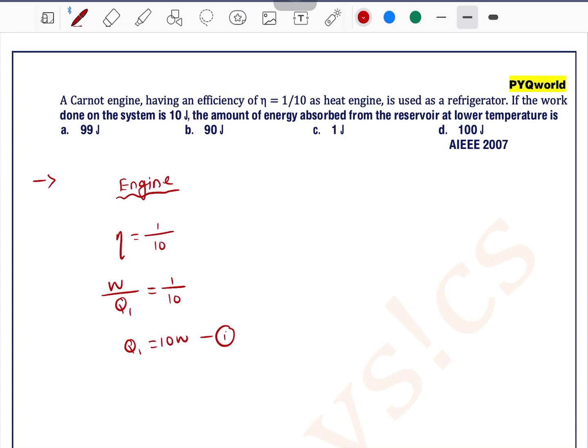Let's say this equation number 1, and it is given that we are using this heat engine as a refrigerator. So if you are using refrigerator, we know that according to the data, the work done on the system is 10 joules. The amount of energy absorbed from the reservoir at lower temperature means it is asked to find Q2.